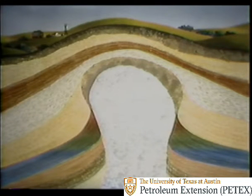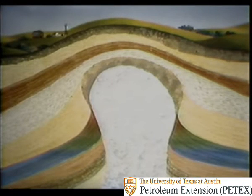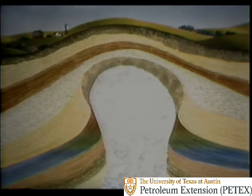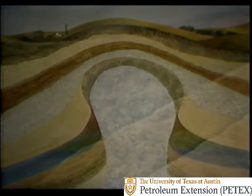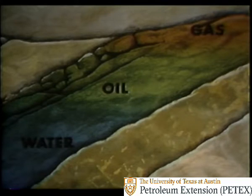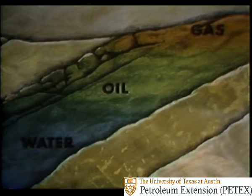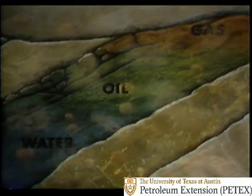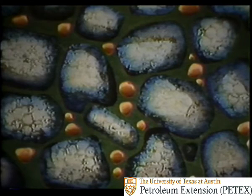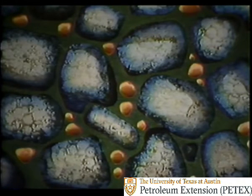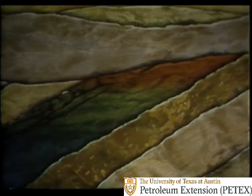Now that we have the oil and gas accumulated in traps, let's look at the trapped hydrocarbons more closely. Gas hydrocarbons, because they're lightest, migrate to the top of the reservoir. The oil is suspended in the middle, and any water present remains at the bottom. There is some gas dissolved in the oil, and some water shares pore space with the oil and gas, but the bulk of the fluids do migrate to different parts of the trap.